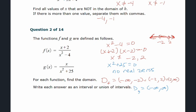x² + 25 is not factorable over the reals — it's factorable only using imaginary numbers as (x + 5i)(x - 5i). The difference of squares is factorable; the sum of squares is not. If you solve x² + 25 = 0 you get x = ±5i — the square root of a negative is not a real number. If you put this function in Desmos, the graph would have no breaks from left to right.